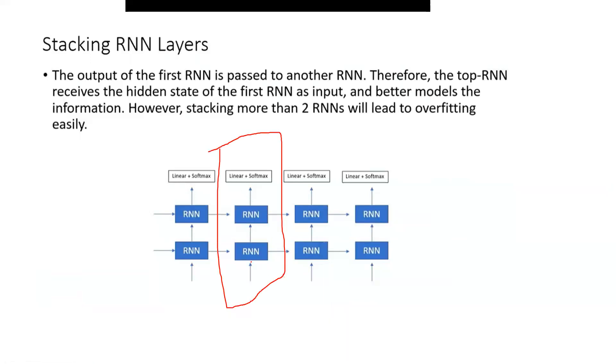Now, we had passed the input in this particular layer, the first RNN. And now, this RNN would pass an output. This output would be passed to the second layer.